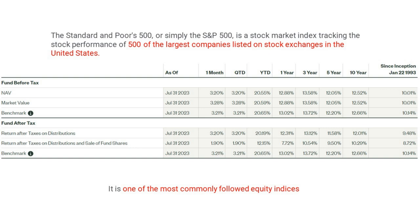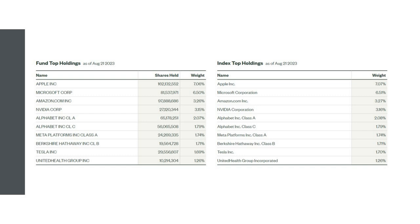This is the 500 largest companies listed on U.S. stock exchanges — a fixed list that changes based on market caps of companies. Index providers have a rebalancing methodology, and people pay close attention to that because this is one of the most commonly followed equity indices. You can see the fund's top holdings and the index's top holdings — because this is such a large fund, it nearly mimics the index perfectly.